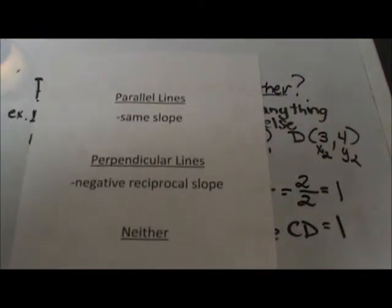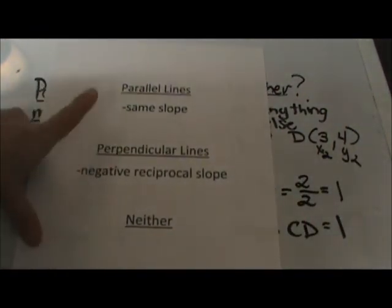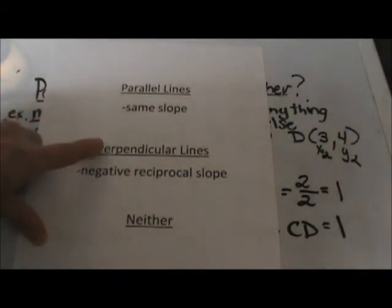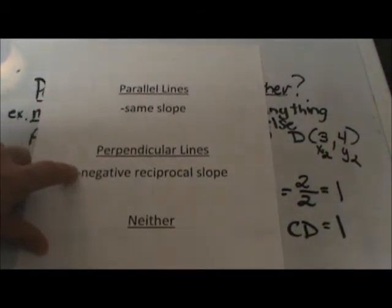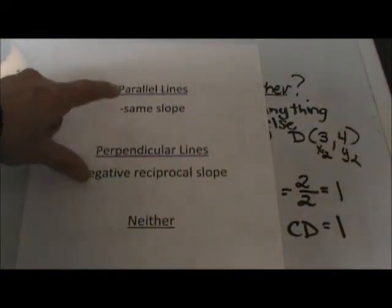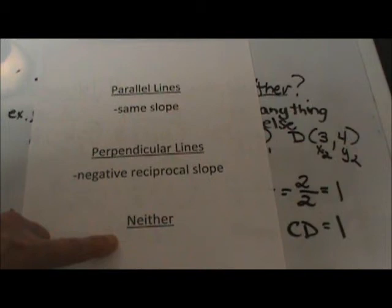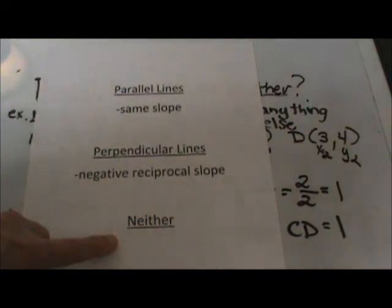Here's a quick overview. If they have the same slope, they're parallel. If they have negative reciprocal slopes, they're perpendicular. And if it's neither one of these, then we say the lines just intersect and they're neither parallel nor perpendicular.